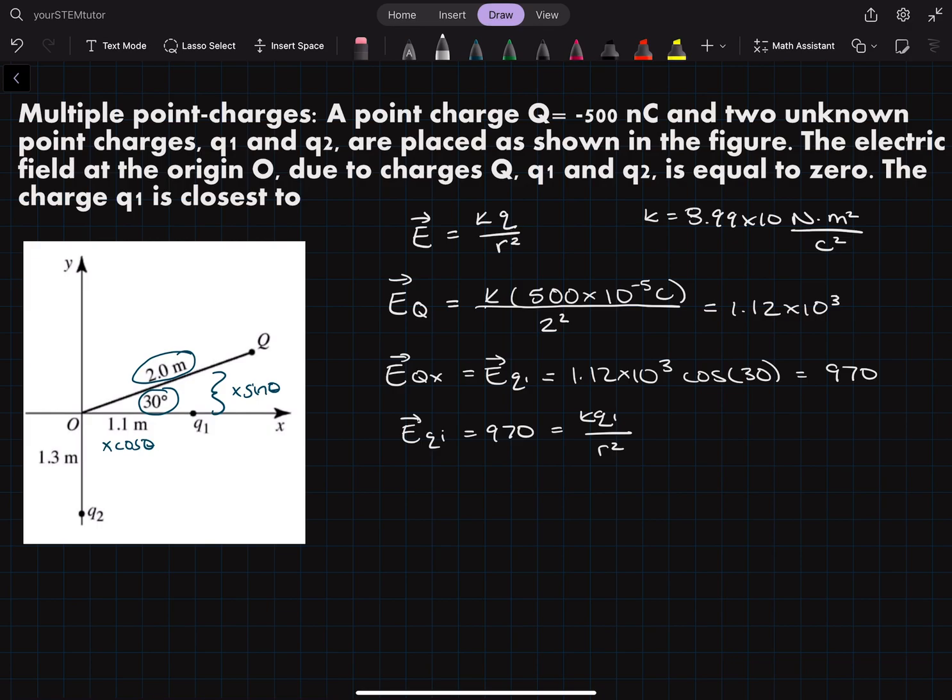So if we move things around, r squared is going to go up top here since we're going to the other side of the equal sign, and then our k is going to go down here since it's on the other side of our equal sign.